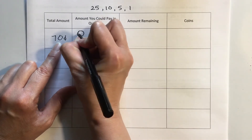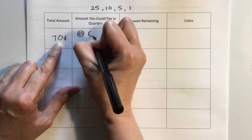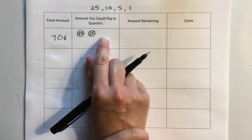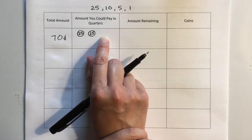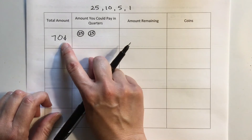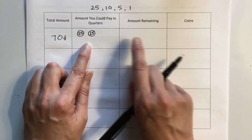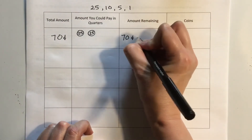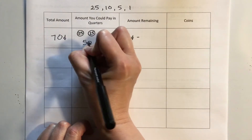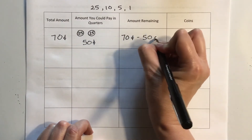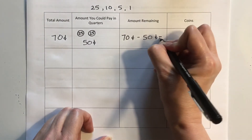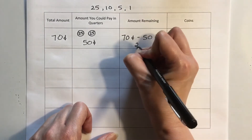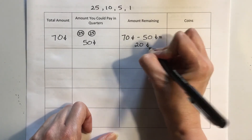Let's say the total amount I want to make is 70 cents. I have to ask myself, how many quarters can I use to make 70 cents? I can use one quarter — that's 25. I can use another quarter — that's 50. But if I use another quarter, I'm going to go too high. I can only use two quarters. Now I want to find out the amount remaining, so I'm going to take 70 cents and subtract the 50 cents in quarters that I was able to use.